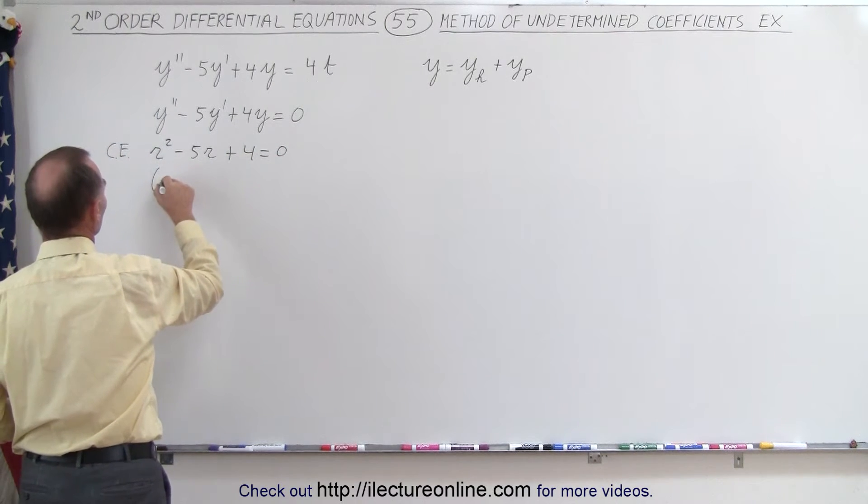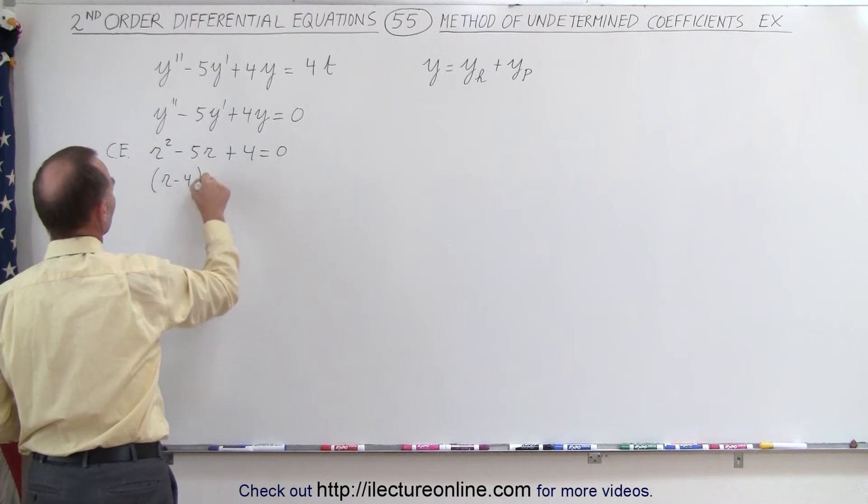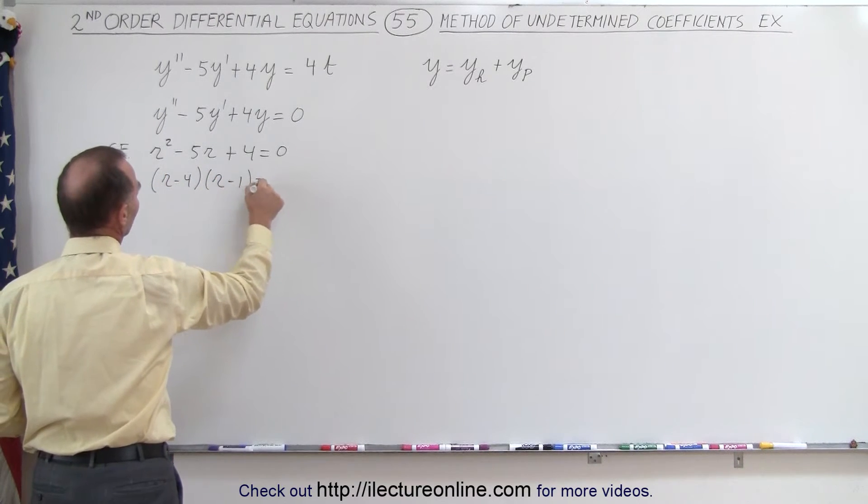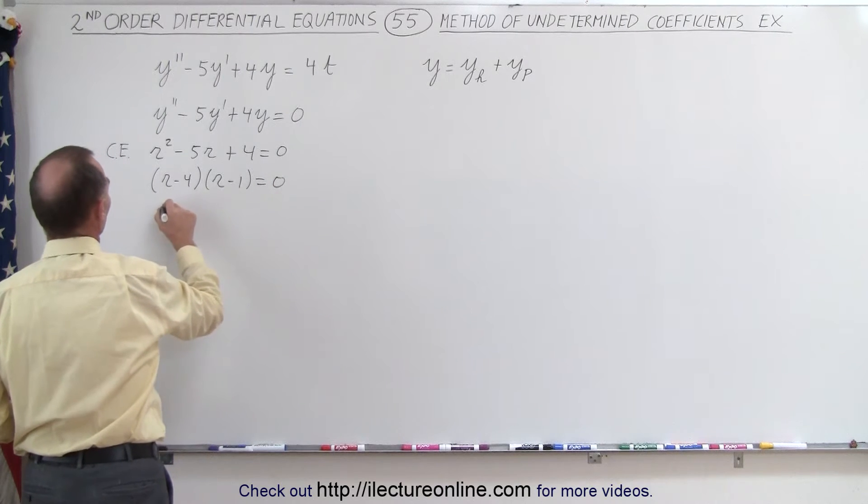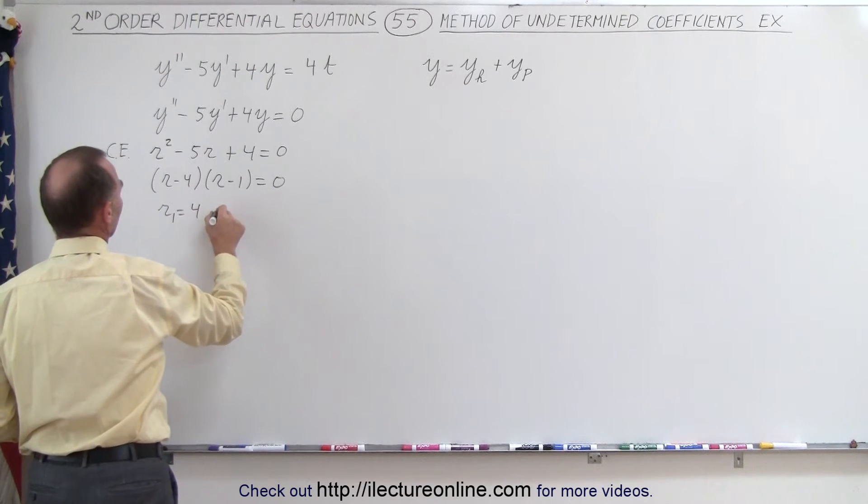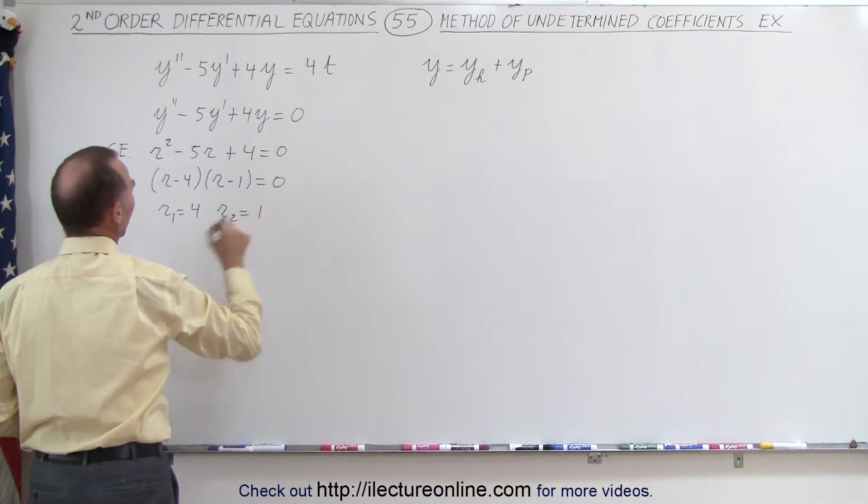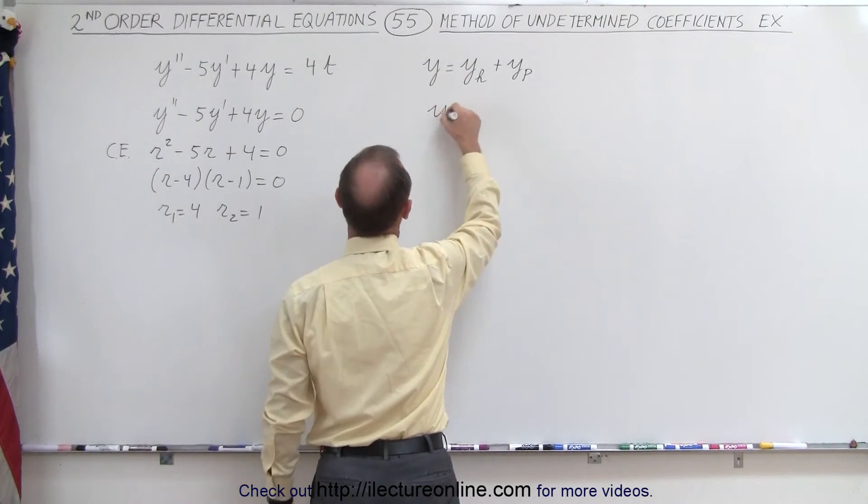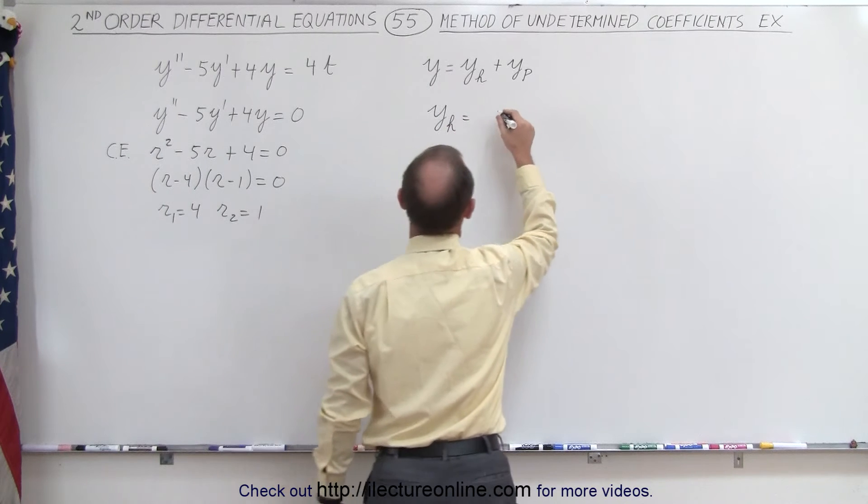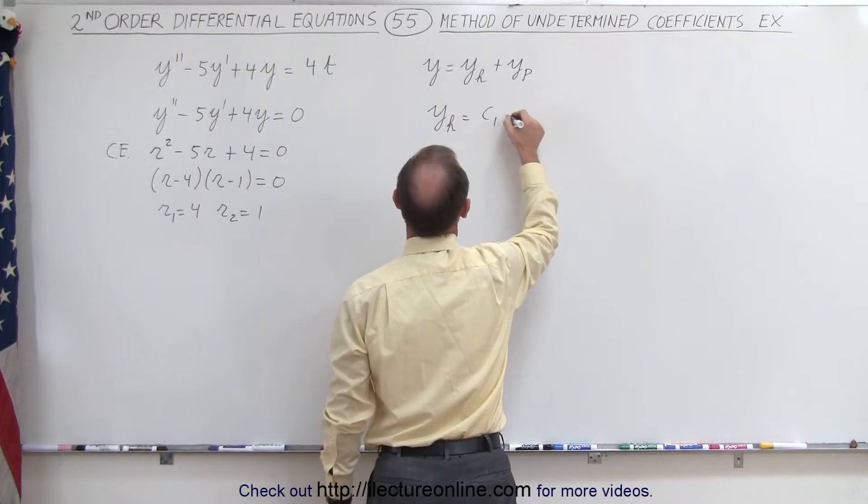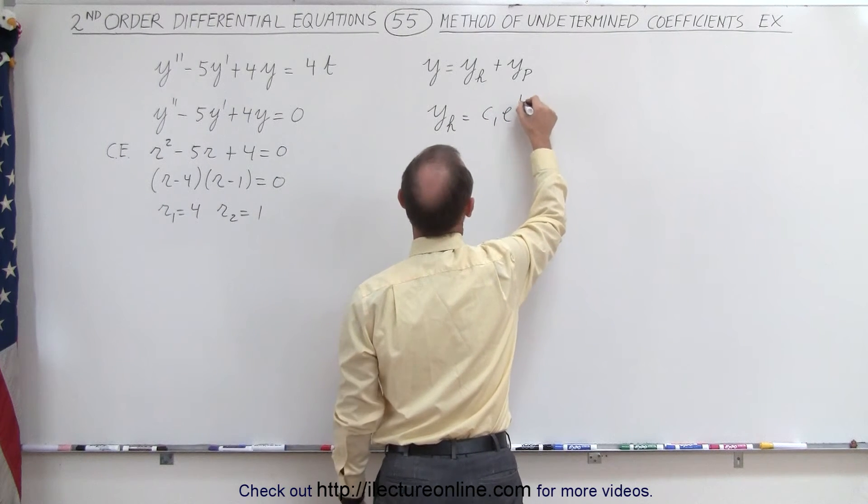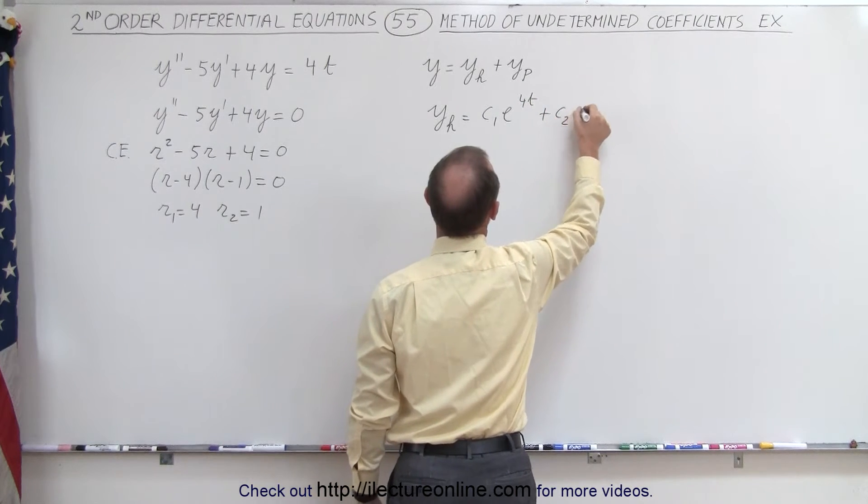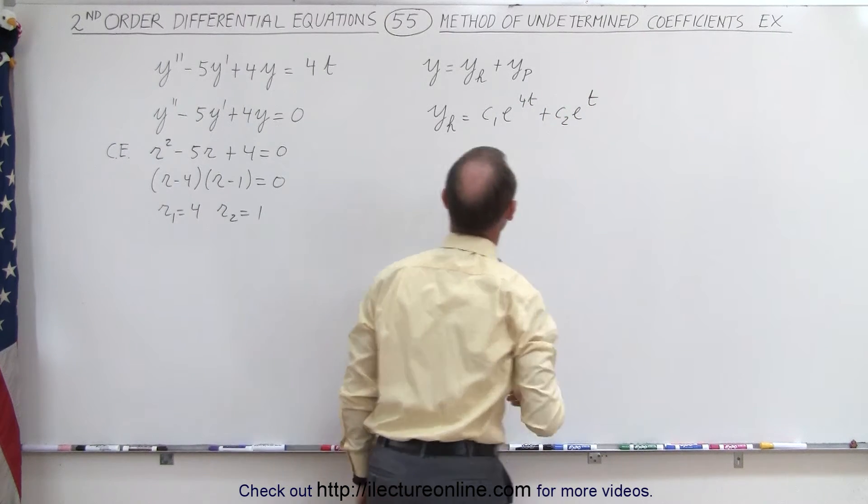And we can factor this into (r - 4)(r - 1) = 0, which means we're going to have two roots: r₁ = 4 and r₂ = 1, which means the homogeneous solution is going to look like this: c₁e^(4t) + c₂e^t.